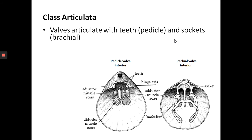In Class Articulata, the valves articulate with teeth. Here I've pried open a brachiopod to show the pedicle valve and the brachial valve — looking at the interior side. This is the point of connection between the two valves. On the pedicle valve you notice protrusions — these are the teeth. The teeth fit into sockets on the brachial valve along the hinge axis, just like the hinge of a door. Teeth and sockets connect perfectly with each other — that is the characteristic of Class Articulata.